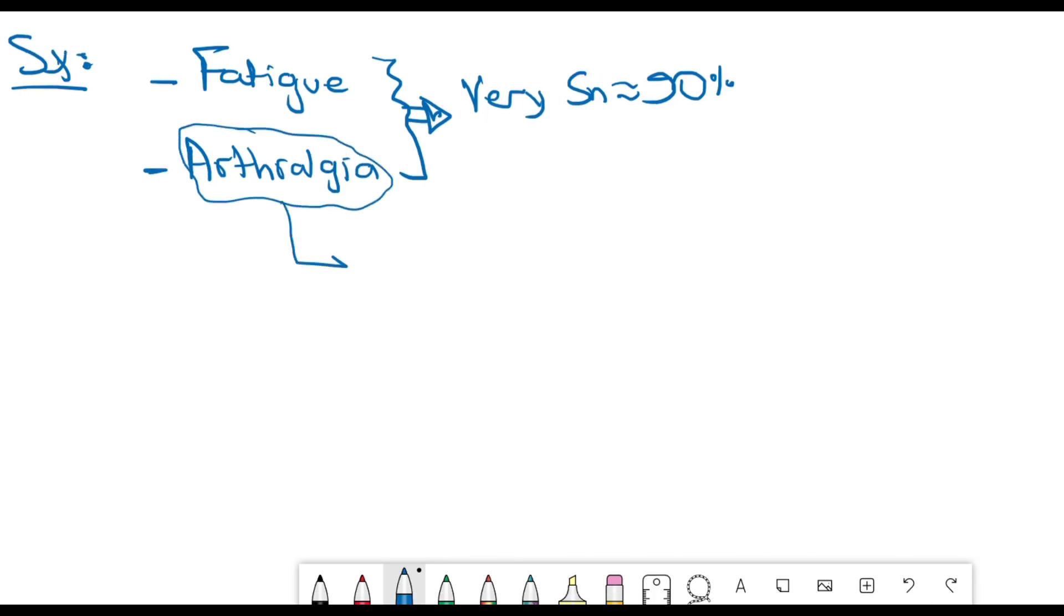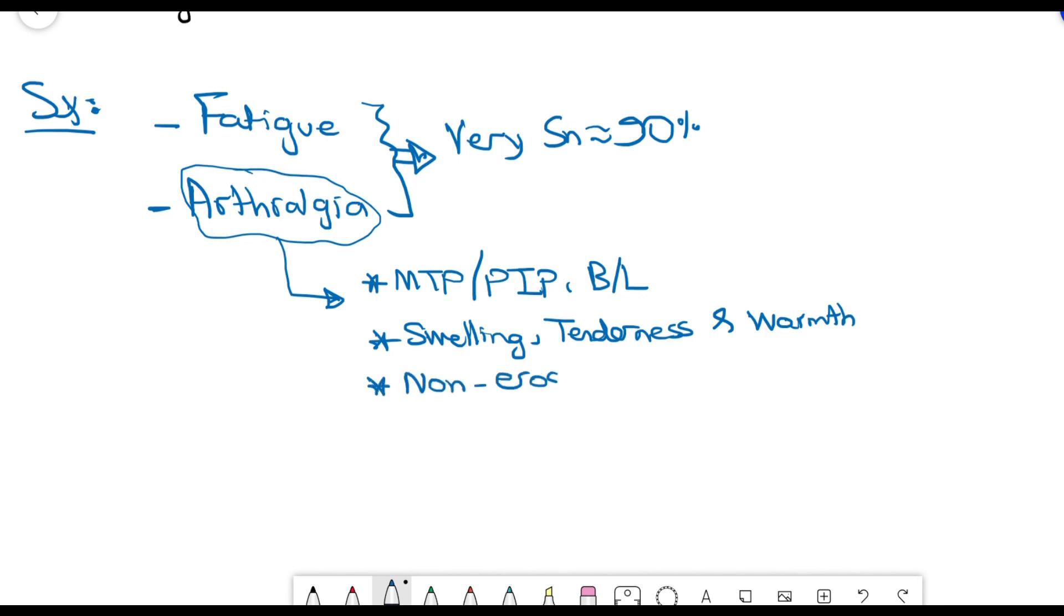The arthralgia mainly involves the metacarpophalangeal and the proximal interphalangeal joints in the hands and is symmetrical bilaterally. It usually has the typical symptoms of inflammatory arthritis which is swelling, tenderness, and warmth. One important distinction is on the x-ray they are non-erosive compared to rheumatoid arthritis or gout.